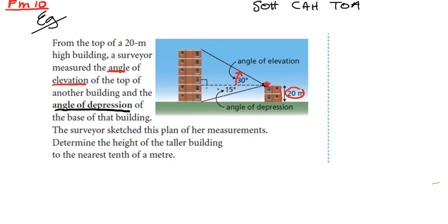You should see that we have actually two right triangles if we make this imaginary line straight across from the top of the building. The surveyor sketched this plan of measurements to determine the height of the taller building to the nearest tenth of a meter. We need to find the height of this tall building. If we can find this side of this right triangle, and this side of the other right triangle, we can add them up.